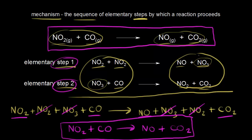Also note the presence of NO3. This NO3 was made in the first elementary step, and then in the second step the NO3 is consumed. So we call this NO3 an intermediate. It's made in one step of our mechanism and consumed in another. The intermediate is not a reactant and not a product — it's something we can sometimes detect, which helps us figure out possible mechanisms for reactions.